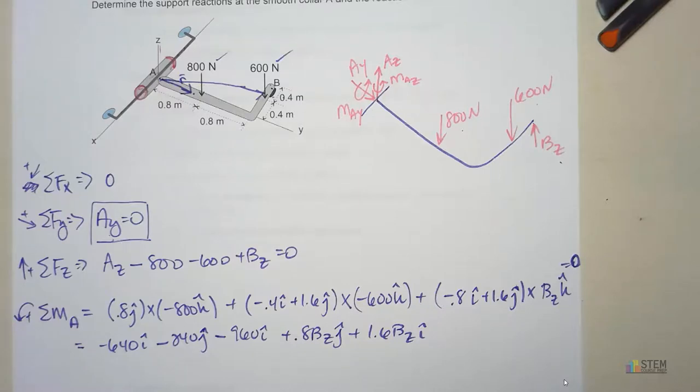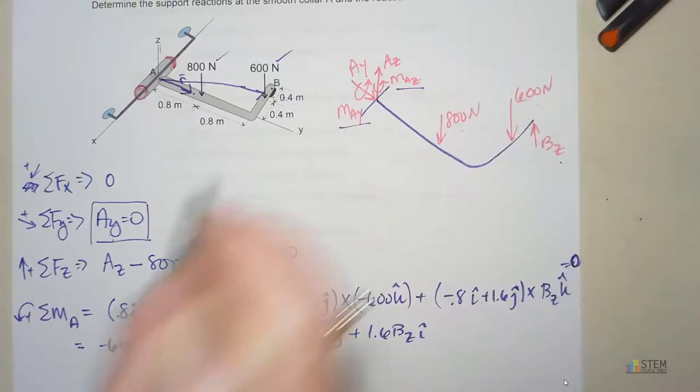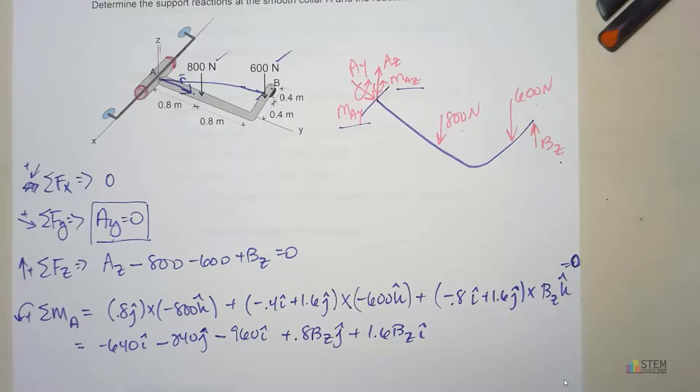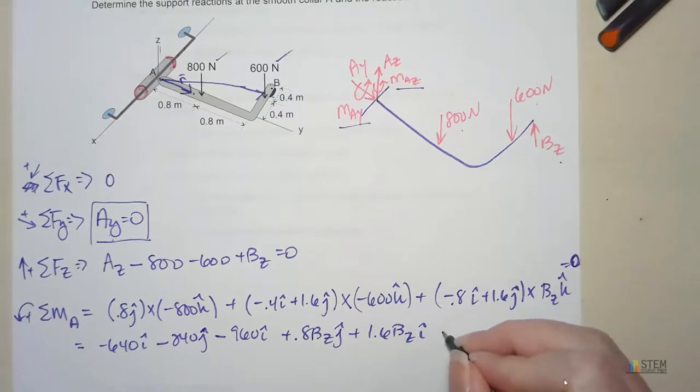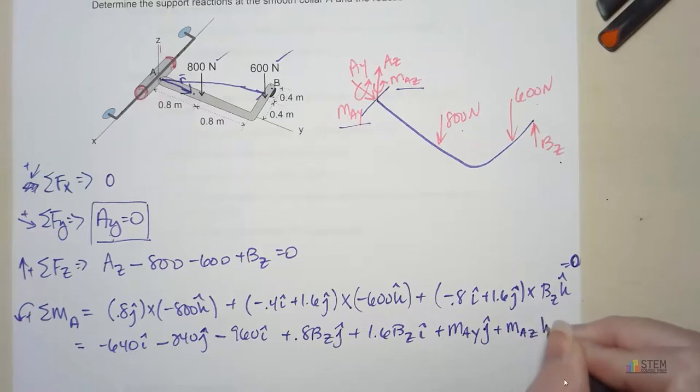Now is there anything else we need to add in here to this moment equation? I forgot about it when I put this equal 0. What are we missing? We forgot about these. We need to put those in. Those aren't due to forces, those are just due to the collar itself. Let's add those in right here. I'm going to assume they're positive. So we have MAY. That's a moment about the Y axis, so the unit vector would be J. And then we have MAZ, K, because this would be a moment about the Z axis. Now that should be 0.